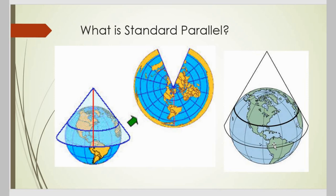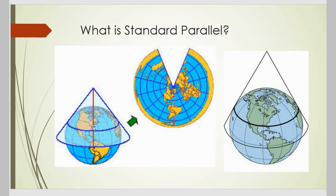So, a parallel is a line of latitude. The cone wrapped around the globe touches the globe at a line or a particular parallel. For example, in this diagram, the blue-colored cone is touching the globe along the blue-colored line, which corresponds to a parallel. A standard parallel is the line of contact between the cone and the globe.